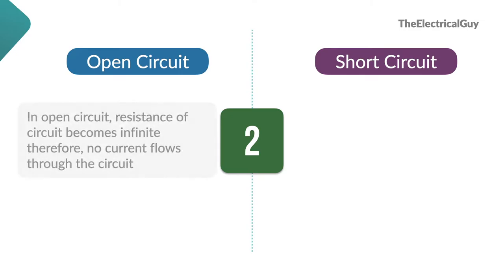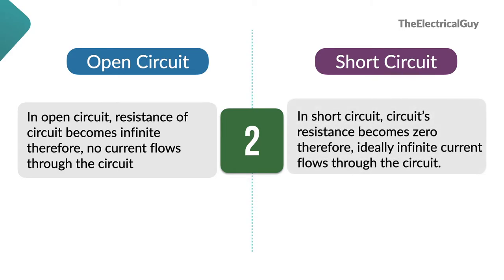So our second point is, in open circuit, resistance of circuit becomes infinite, therefore no current flows through the circuit. In short circuit, circuit's resistance becomes zero, therefore ideally infinite current flows through the circuit. You can split this point into two as well, one for resistance and another for current.